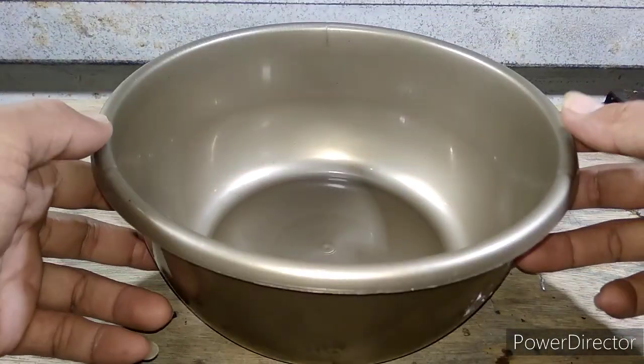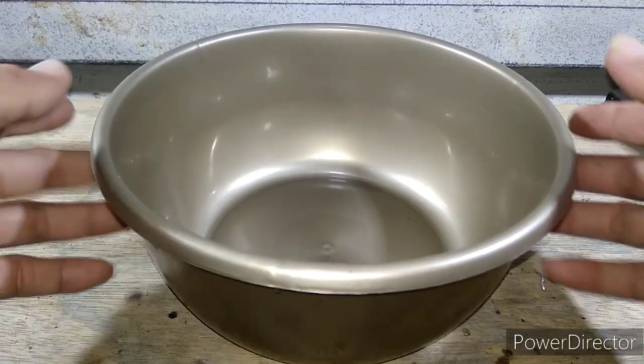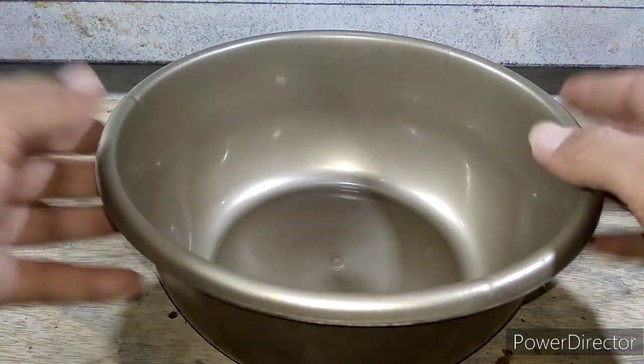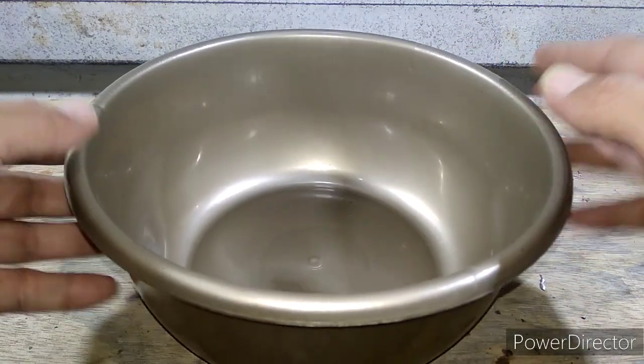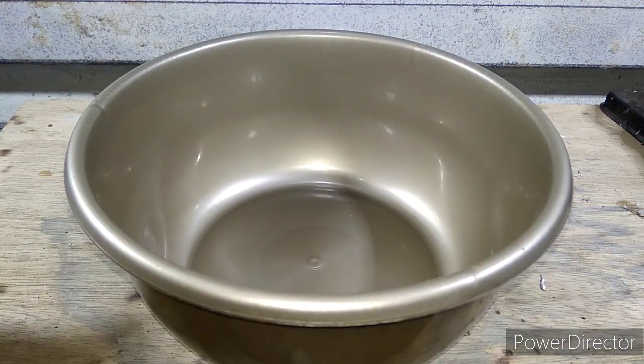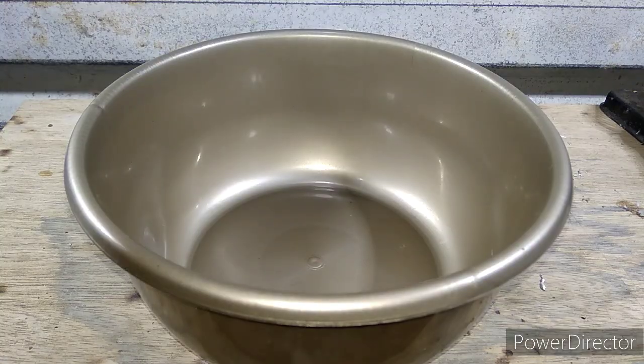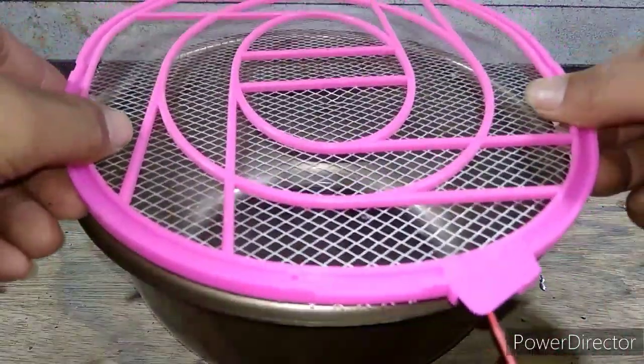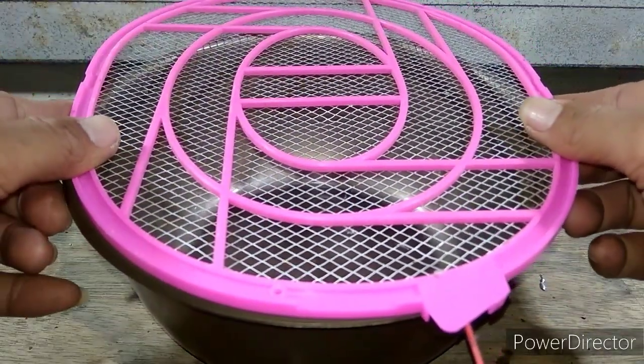Untuk langkah selanjutnya, saya siapkan baskom. Ini bebas mau menggunakan apa, karena di dapur adanya baskom, saya gunakan ini saja. Dan saya potong untuk raket nyamuknya sesuai besar baskomnya.